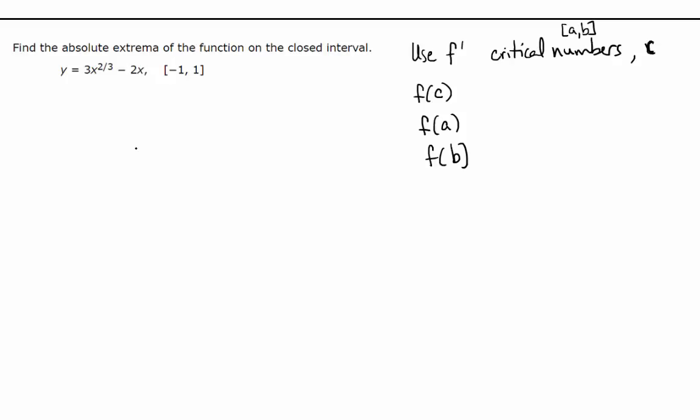All right, so in any case, let's see. What's f prime? f prime of x is going to be 3 times 2/3 x to the negative 1/3 minus 2. So f prime of x is equal to... I'm going to write this as 2 over the cubed root of x, just so I feel like I kind of understand it better that way.